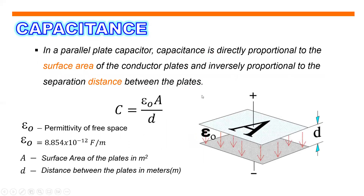In a parallel plate capacitor, capacitance is directly proportional to the surface area of the conductor plates, and inversely proportional to the separation distance between the plates. To express this, capacitance equals epsilon sub zero multiplied by A all over D, where epsilon sub zero is the permittivity of free space, equal to 8.854 times 10 to the negative 12 Farads per meter — a constant factor. A is the surface area of the plates in square meters, and D is the distance between the plates in meters.